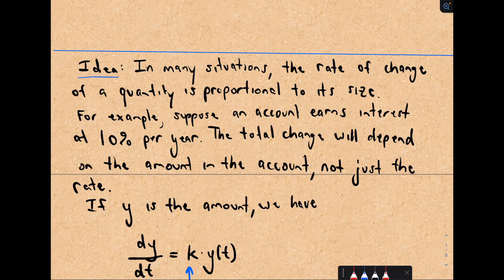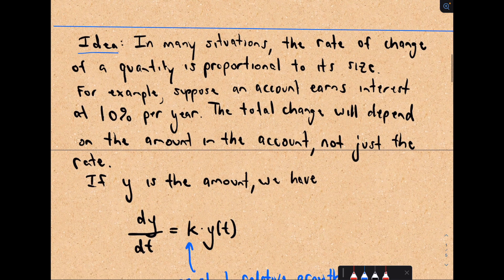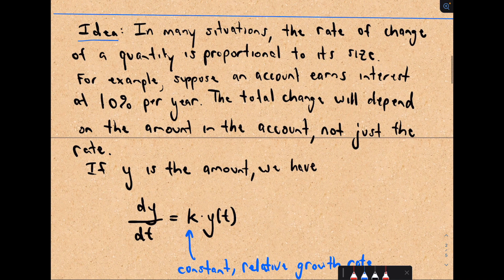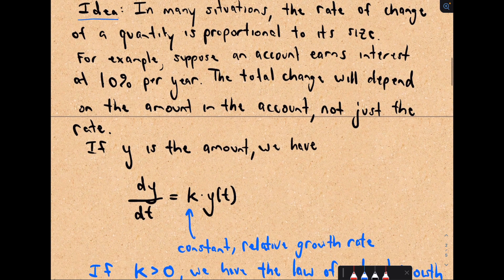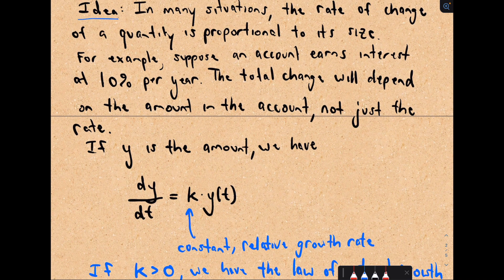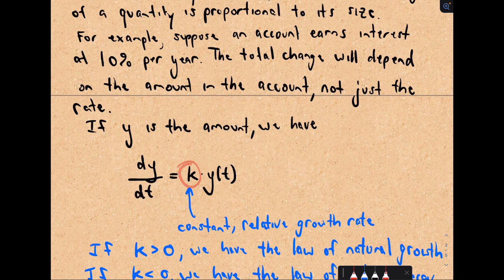A perfect example: suppose your account earns interest at 10% per year. The total change in the amount depends not just on the interest rate, but also on the amount in the account. If you've got a dollar in there, you won't earn much interest. But if you've got 10 million, great. So the rate of change depends on the amount present and also some constant, which we call k, known as the relative growth rate.